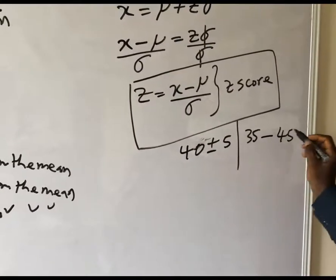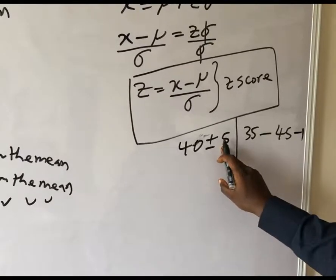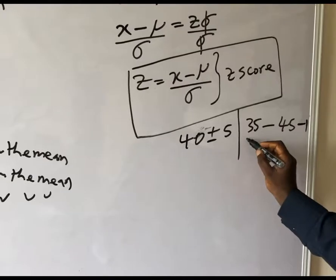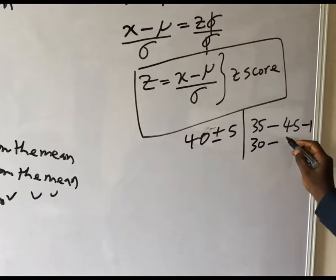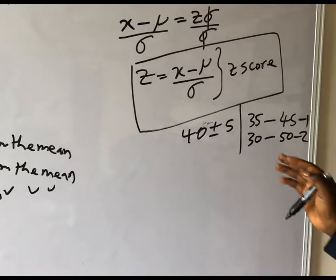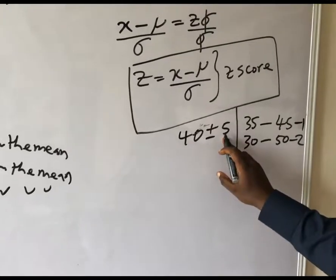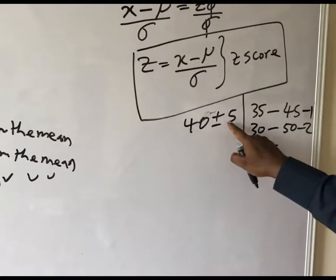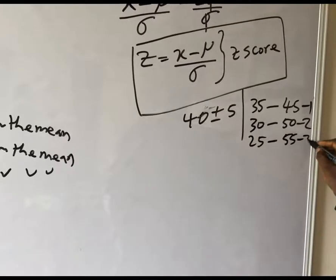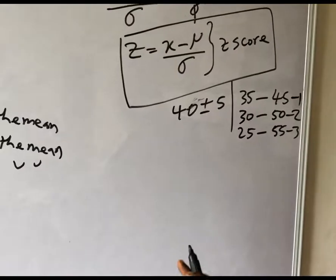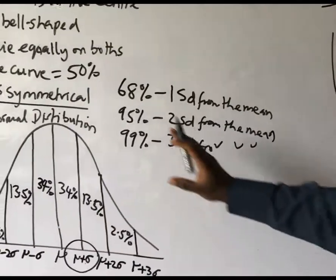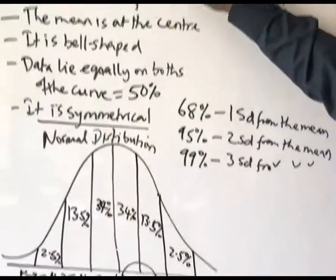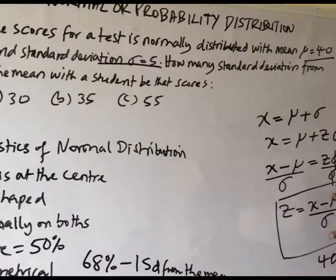At two standard deviations, we multiply the standard deviation by 2, giving us 10. So 40 minus 10 equals 30, and 40 plus 10 equals 50. For three standard deviations, 3 times 5 is 15, so 40 minus 15 equals 25, and 40 plus 15 equals 55. Any value in the distribution will lie within this range.